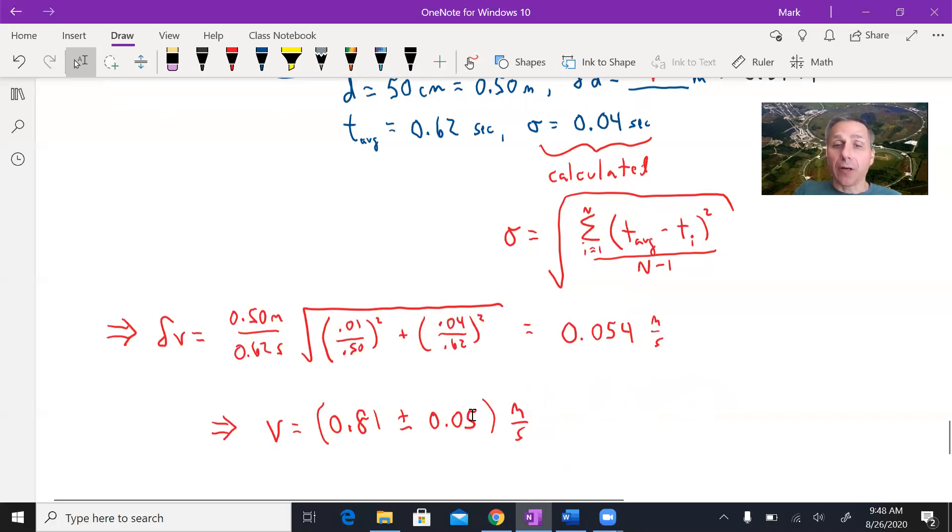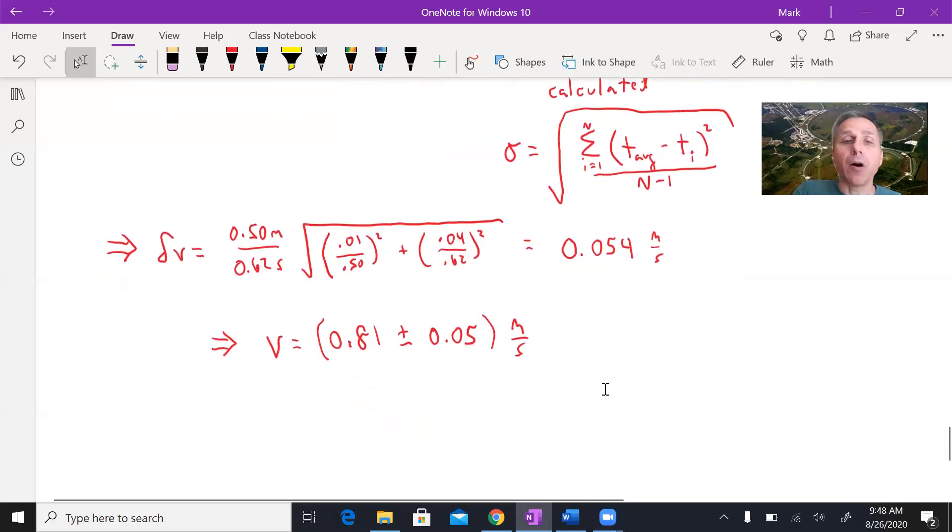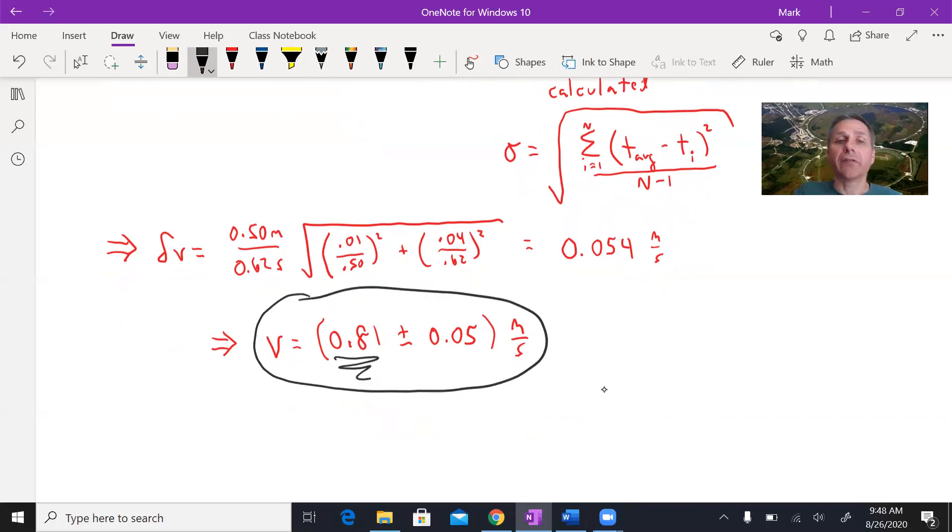So what we report, like if you're doing a lab report or something for the speed of that ball, would be the speed result, distance divided by time, plus or minus this result that we get by the propagation of uncertainty. By combining the uncertainties of distance and time to get the uncertainty and the speed of the ball.